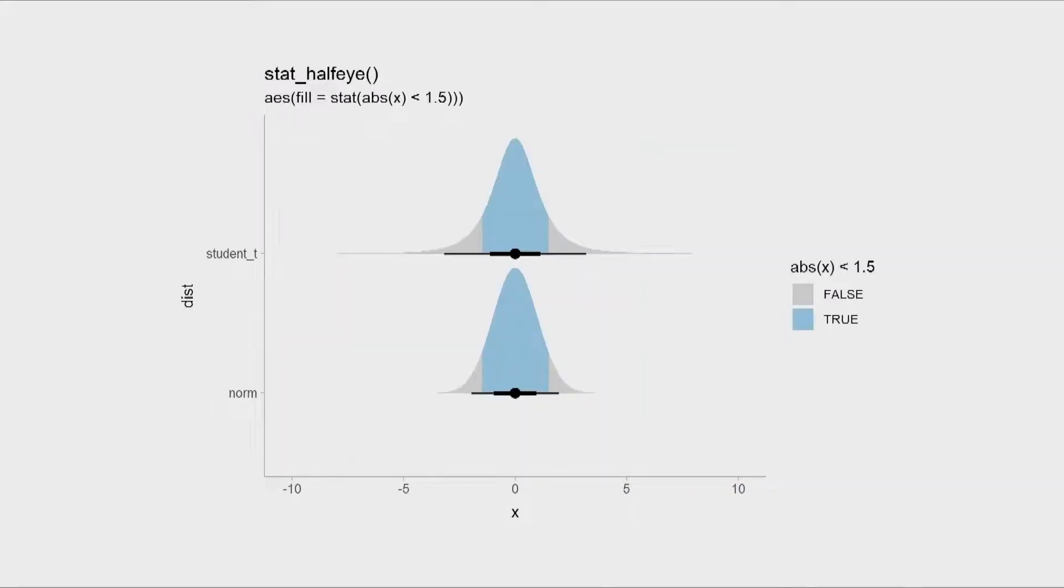Other things that you can do with mapping aesthetics at the sub-slab level. So here what we're doing is we're saying, oh, there's a particular region of interest. Maybe we're interested in 0, plus or minus 1.5. So we just map that region onto a different color. ggdist subdivides the geometry and then allows you to actually map colors onto sub-parts of the geometry.